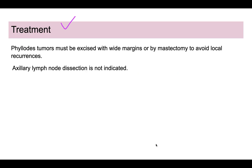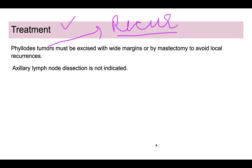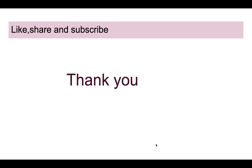Treatment depends on whether the tumor is benign or malignant, but phyllodes tumors are known to recur after excision. Therefore, they should always be excised with wide margins or by total mastectomy to avoid local recurrence. Because it is mostly a benign tumor, axillary lymph node dissection is not indicated.